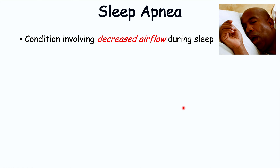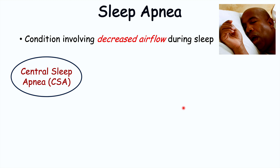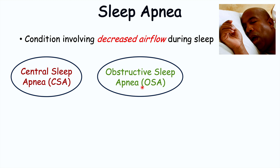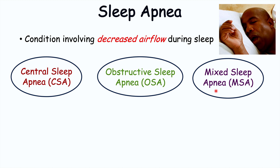There are three main types of sleep apnea conditions. One of them is known as central sleep apnea or CSA, the second is obstructive sleep apnea or OSA, and the third is mixed sleep apnea or MSA. Each of these have slightly different pathophysiological mechanisms and each causes slightly different signs and symptoms, which we will talk about later on in this lesson.